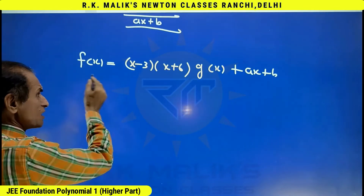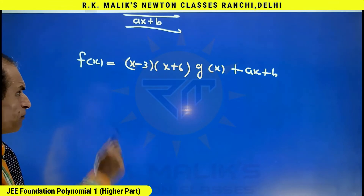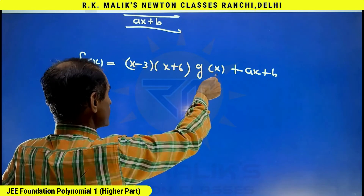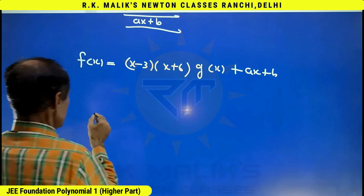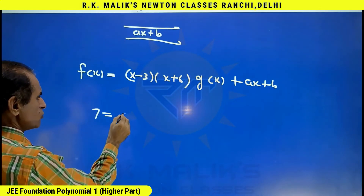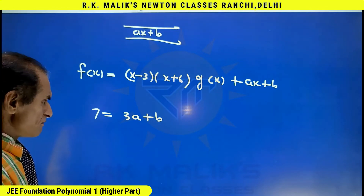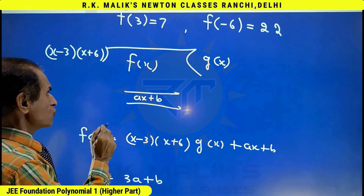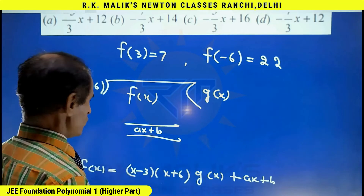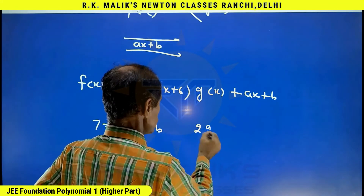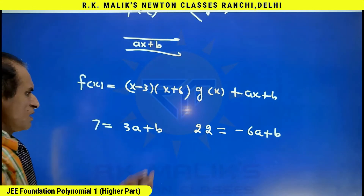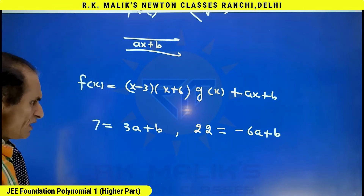Now f(3) is 7. Put x=3 on both sides — the benefit is this whole (x-3)(x+6)·g(x) term becomes 0, and f(3) is known as 7. Hence I get 7 = 3a+b. Now put x = -6, and because f(-6) = 22, I get 22 = -6a+b. Using these two equations you can easily find the value of a and b.